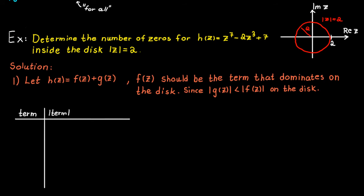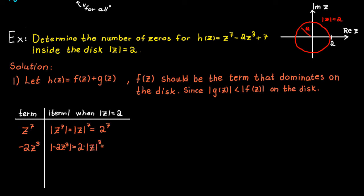I'll make a table with all the terms and their absolute values on the disk. The first term is z raised to the power of 7, and its absolute value on the disk is 2 raised to the power of 7. The next term is minus 2z raised to the power of 3, and its absolute value on the disk is 2 raised to the power of 4. The last term is 7, and its absolute value on the disk is 7. So the term that dominates on the disk is z raised to the power of 7.